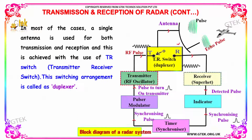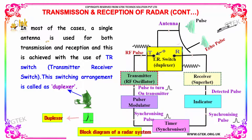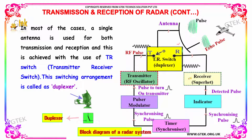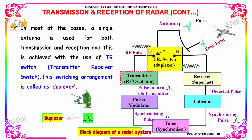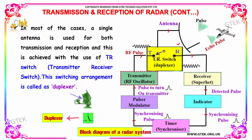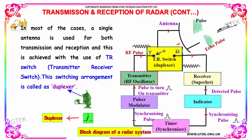In most cases, a single antenna is used for both transmission and reception. This is achieved with the use of a TR switch — transmitter, receiver, switch. The switching arrangement is called a Duplexer.